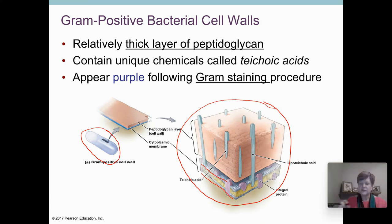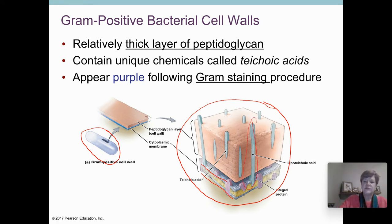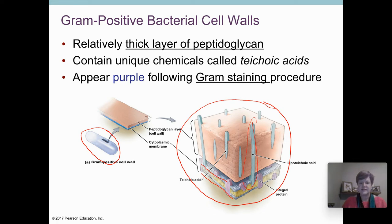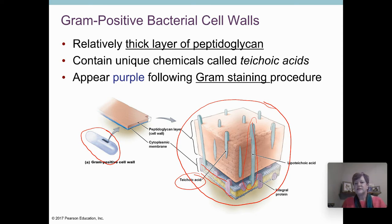Those pink bricks represent the NAG-NAM strands and the crosslinks with the short peptides. Also pushed down into the cell wall is something called teichoic acid — that's how you spell it — and there are a couple of different versions of teichoic acid in the cell wall structure for a gram positive bacterial cell wall.